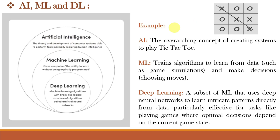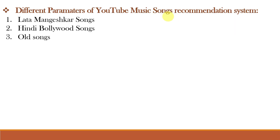Let us understand with one example of the tic-tac-toe game. Artificial Intelligence is the system or software that plays this game with you — you make one move, the computer makes the next. In Machine Learning, it teaches algorithms to improve performance through data analysis, as seen in refining moves in this game. In Deep Learning, it employs complex neural networks to autonomously learn patterns from data, enhancing decision-making based on the current game state.